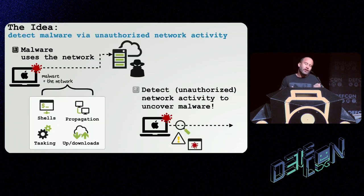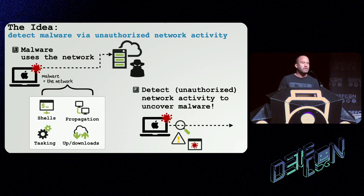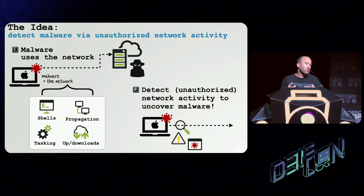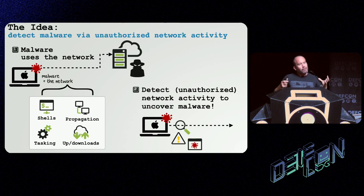The main idea — and this is a very obvious idea, so I'm not claiming this is new — is to detect malware via unauthorized network activity. This is based on two very obvious observations: first, malware uses the network in a variety of ways. It pops reverse shells, it might propagate to other machines, a lot of malware especially backdoors will interact with a command and control server, and a lot of malware will download additional payloads or exfiltrate files to a remote server. So there are a lot of opportunities for detecting malware based on its network traffic. The idea is if we can observe this network activity and classify it as suspicious or unauthorized, we should be able to generically uncover malware.